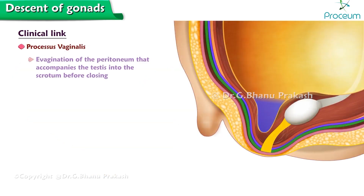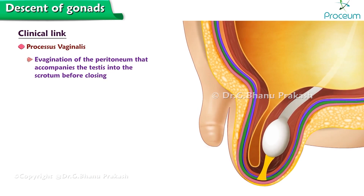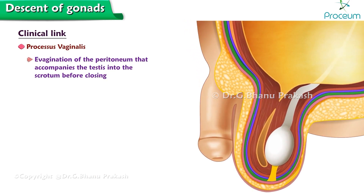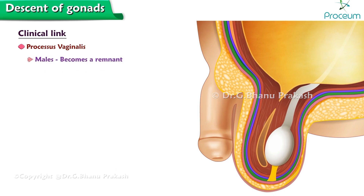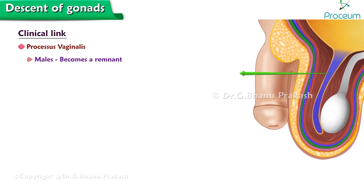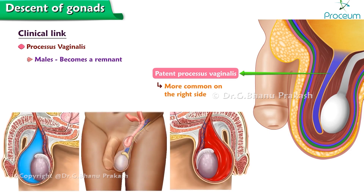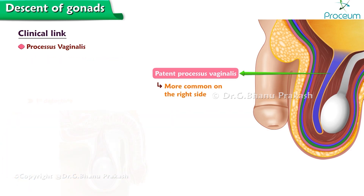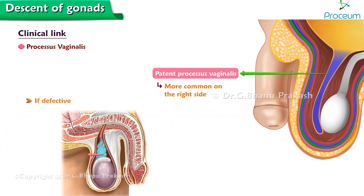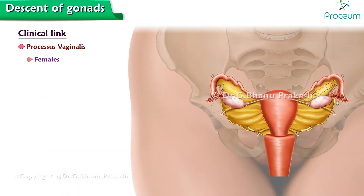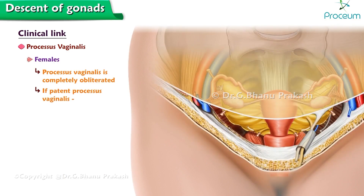The processus vaginalis is an evagination of the peritoneum that accompanies the testes into the scrotum before closing. In males, it becomes a remnant known as the tunica vaginalis. A failure to close, or patent processus vaginalis, is more common on the right side and is associated with hydrocele, indirect inguinal hernia, and scrotal hematocele. If defective, it is associated with testicular torsion. In females, the processus vaginalis is completely obliterated. If there is a patent processus vaginalis, then it is called the canal of Nuck.